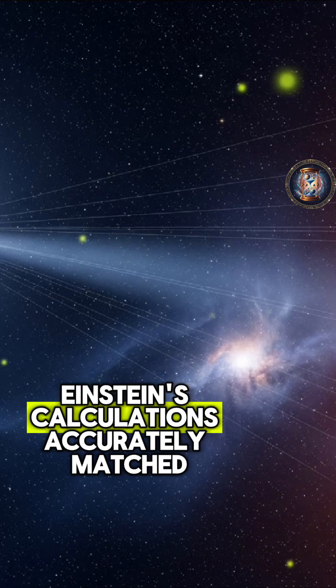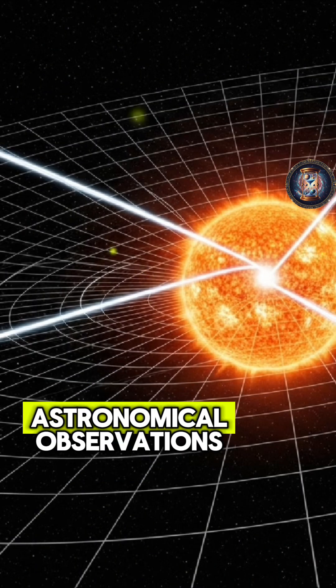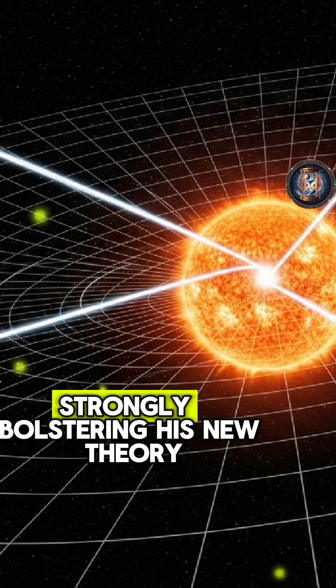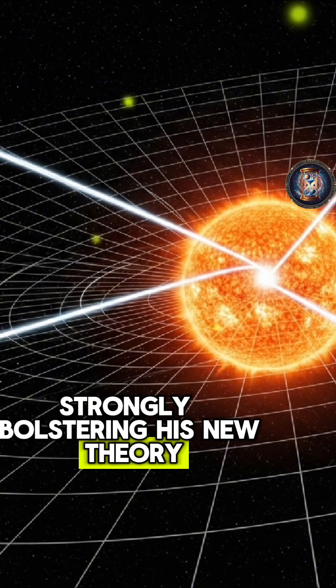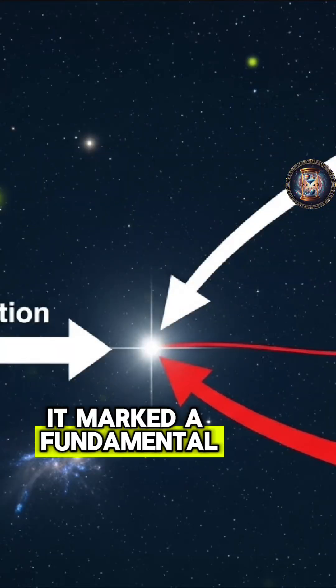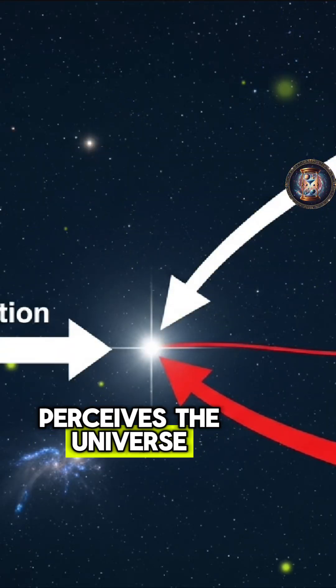Einstein's calculations accurately matched astronomical observations, strongly bolstering his new theory. It marked a fundamental shift in how humanity perceives the universe.